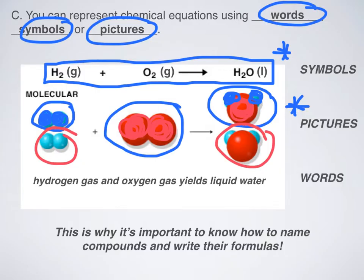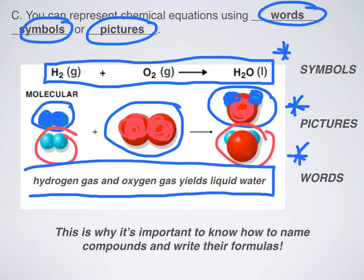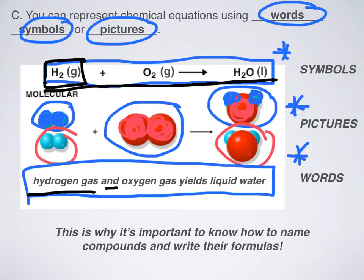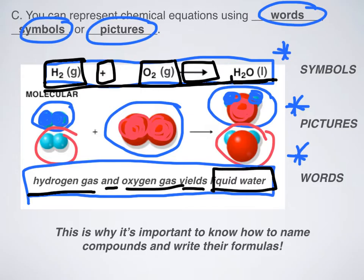Being able to seamlessly switch from symbols to pictures to words is what we're going for in this unit. For example, how would I read the symbolic equation H2(g) + O2(g) → H2O(l)? I would say: hydrogen gas and oxygen gas yields liquid water. Being able to translate between all three representations is the goal.